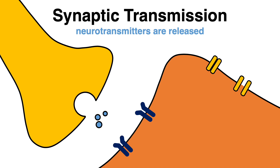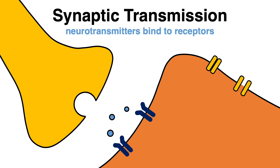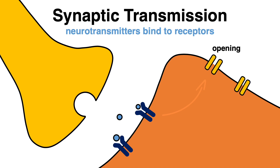When the neurotransmitters are released, they diffuse across the cleft and bind to receptors on the postsynaptic neuron. The response to that is based on the specific neurotransmitter molecule and the respective receptor protein. Receptor activation either leads to an opening or closing of ion channels in the postsynaptic cell membrane.